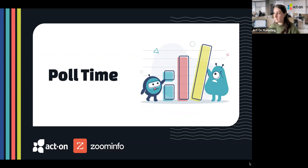Looking at the poll results — most of us are currently using lead scoring, with a couple of 'no' and a few 'unsure.' For lead scoring strategy type, a couple of people are using behavioral or demographic only, a lot are using a combination, and of course some are not using lead scoring at all.